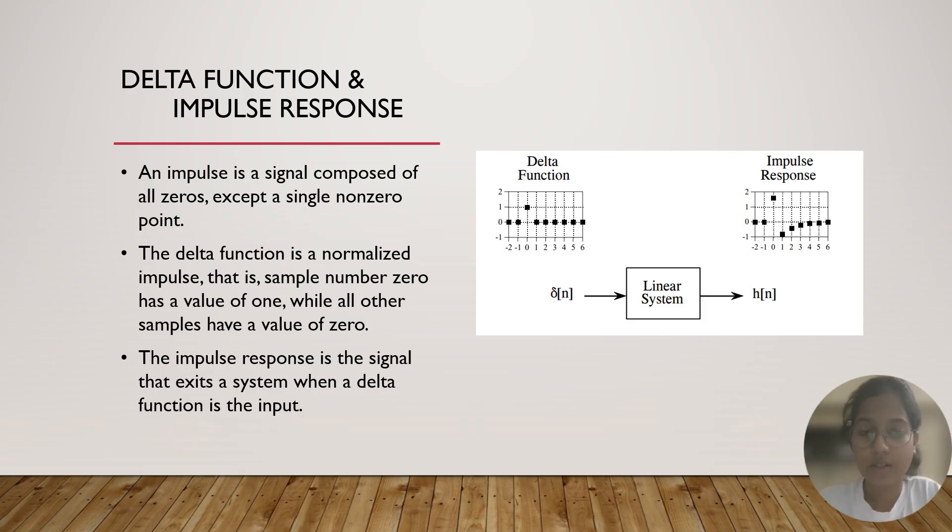Then, what is the delta function? Delta function is a normalized impulse function. That is, at sample number 0, the value of the function is 1, and in remaining other samples, it has the value 0. It's similar to the spike function, where at t equal to 0, the value of the signal is 1.